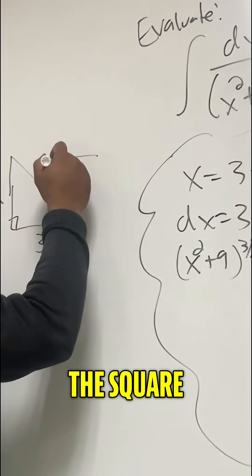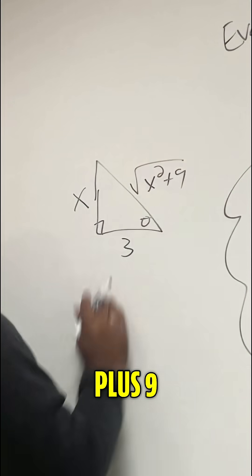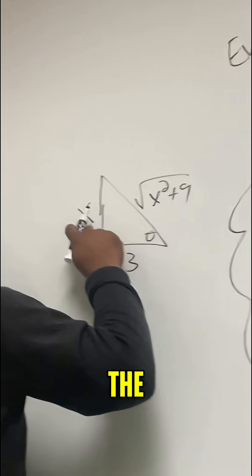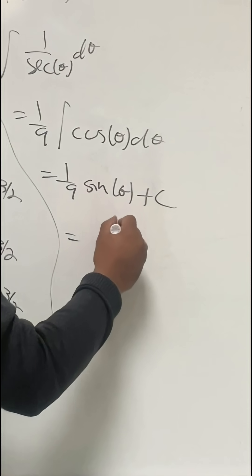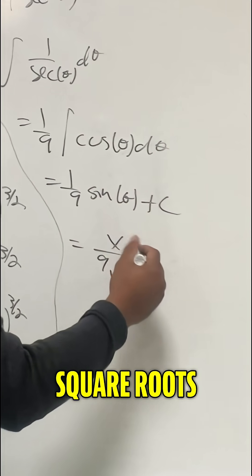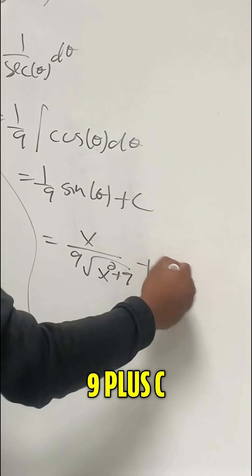The hypotenuse is the square root of x squared plus 9. So to find the sine of theta would be the opposite over the hypotenuse. And so this gives me x over 9 square root of x squared plus 9 plus c.